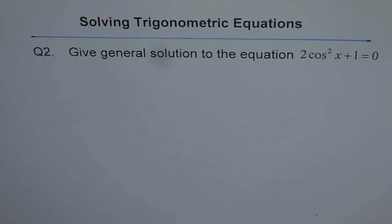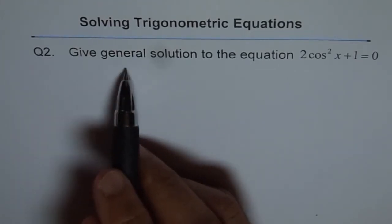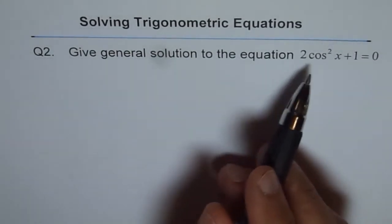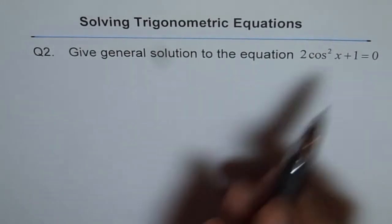Solving Trigonometric Equations. Question 2: Give general solution to the equation 2 cos square x plus 1 equals to 0.